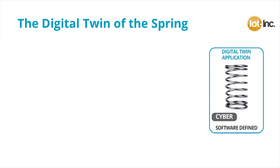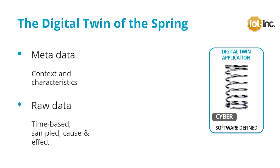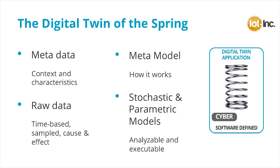To simulate even the simplest of products — a spring — it needs to be represented with a sophisticated digital twin, consisting of two types of data and two types of models. Note that this is a digital representation of not how it looks, but what it does and how it operates.